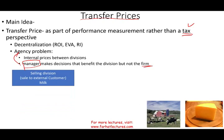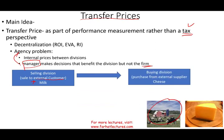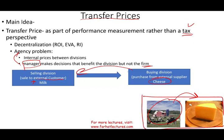The selling division records the transaction as if they sold to an external customer. Let's assume they're selling milk — we have a farm division selling to another division in the company that produces cheese. When the cheese division purchases from the milk division, they record the transaction as if they purchased the items from an external supplier, even though both companies are under the umbrella of one parent company. This is where transfer prices occur.